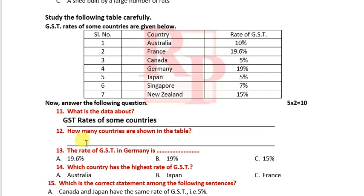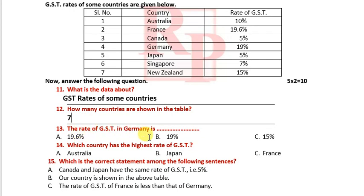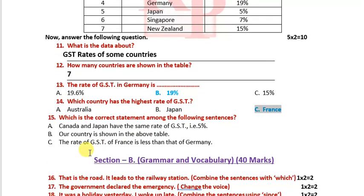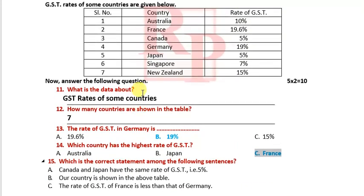How many countries are shown in the table? Seven countries. The rate of GST in Germany is 19%. Which country has the highest rate of GST? France has the highest rate. Which is the correct statement? Canada and Japan both have a 5% GST, so the answer is: Canada and Japan have the same rate of GST.